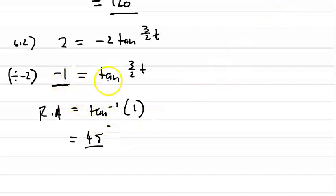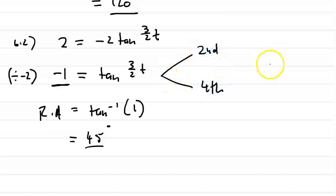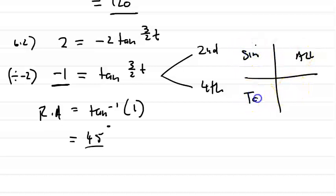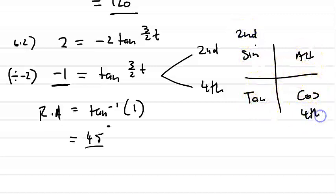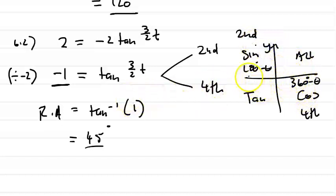Where is tan(3/2·t) equals minus 1? That's where tan is negative. Tan will be negative in the second quadrant and also in the fourth quadrant. According to our CAST diagram: in the first quadrant all functions are positive, in the second quadrant sin is positive, in the third quadrant tan is positive, and in the fourth quadrant cos is positive. So tan is positive in the first and third quadrants and negative in the second and fourth. The formulas are: second quadrant is 180 minus theta, fourth quadrant is 360 minus theta. Because the tan function has a period of 180°, it repeats every 180 degrees, so we only need one solution — but let's do both.